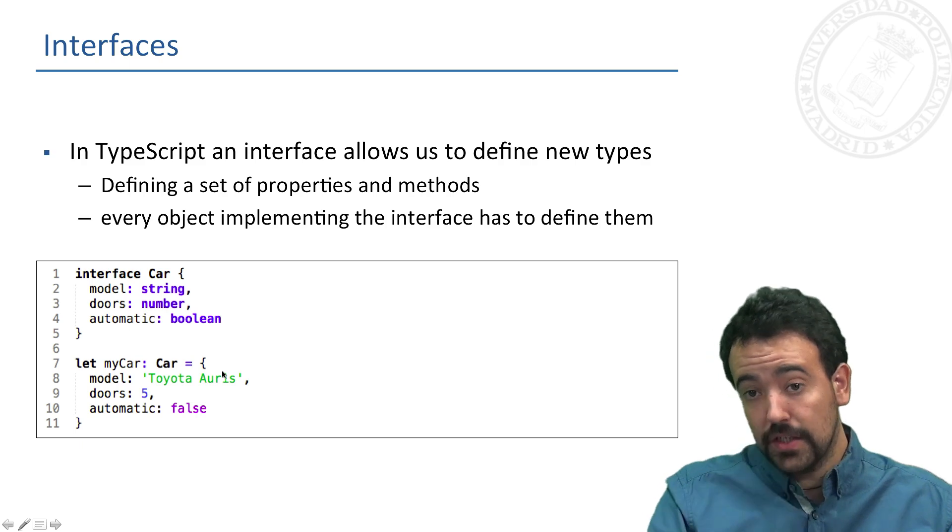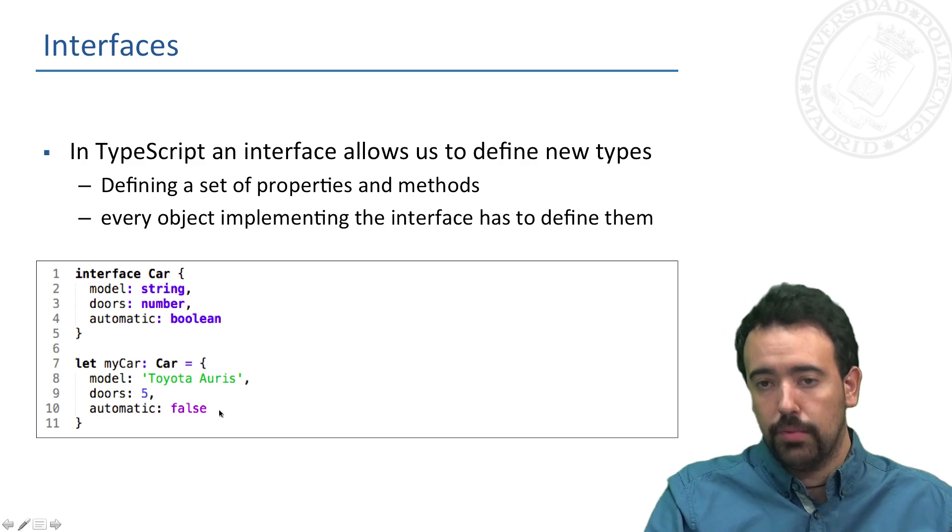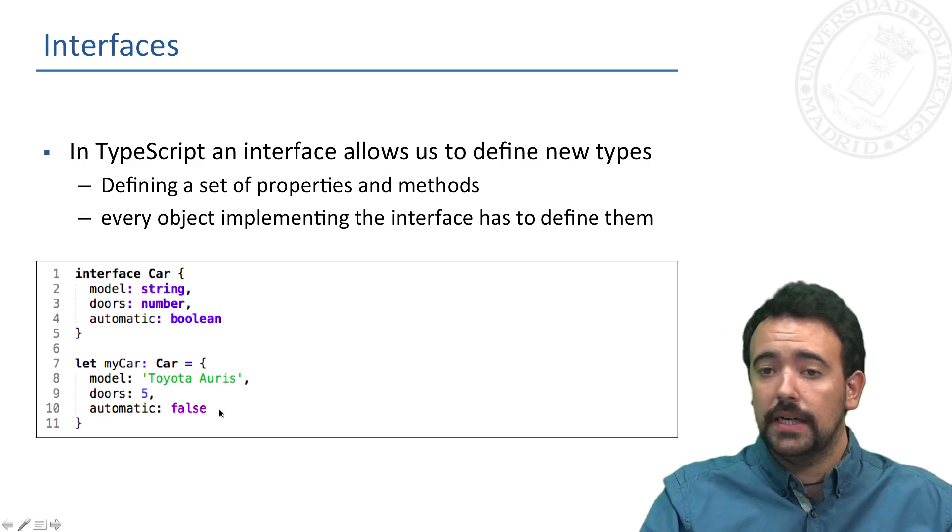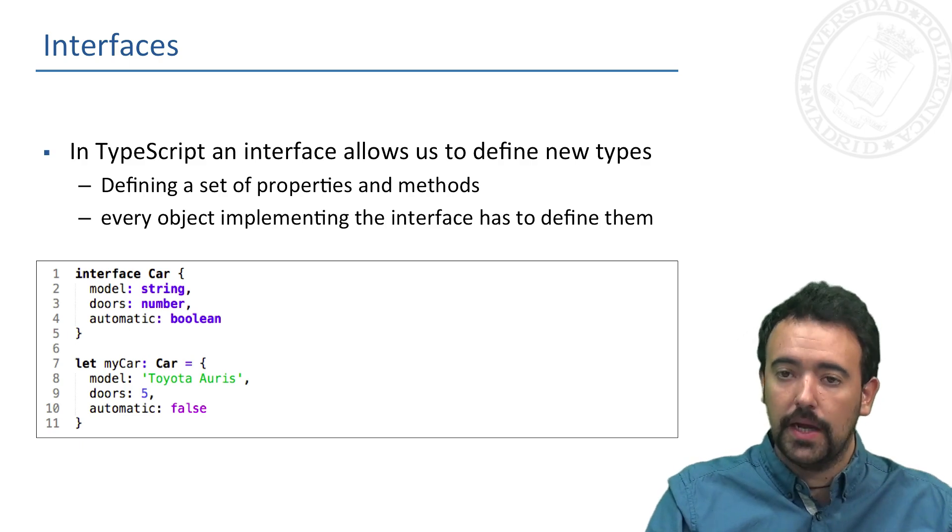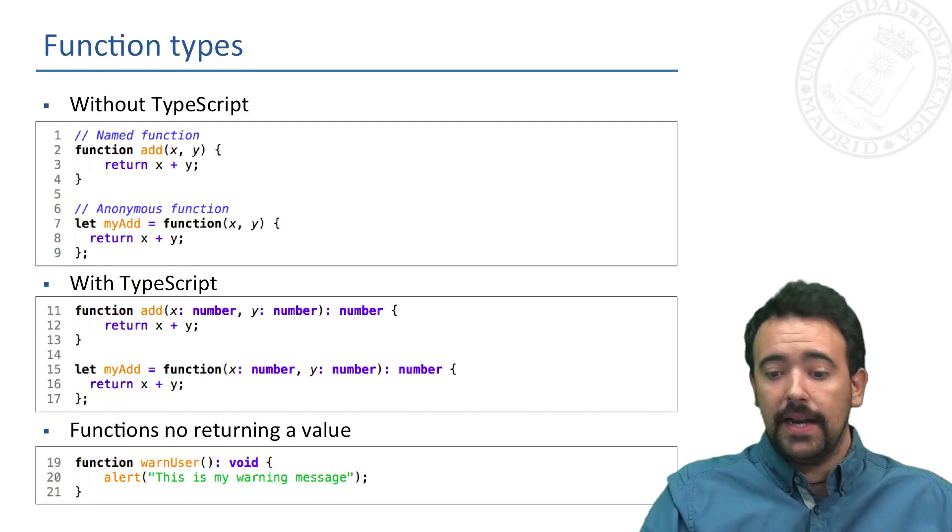Then when I am able to define new variables of type car, I have to define in form of this object the set of properties: of course a string, a number, and a boolean. This is very useful for defining new types in our TypeScript application.